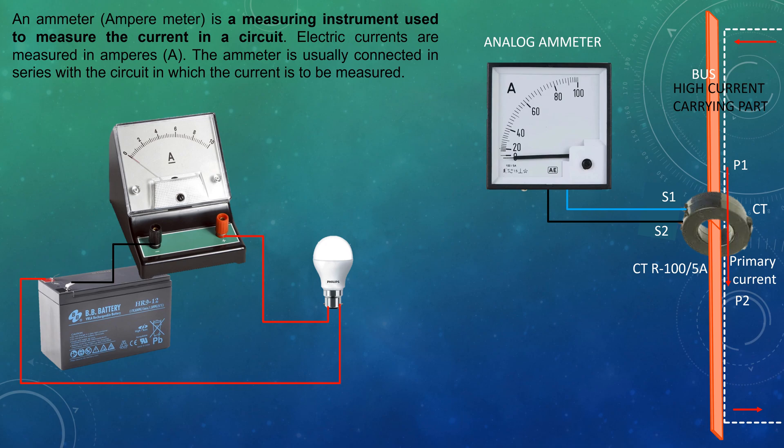For example, if primary side current is 100 amperes, then secondary side current will be 5 amperes.